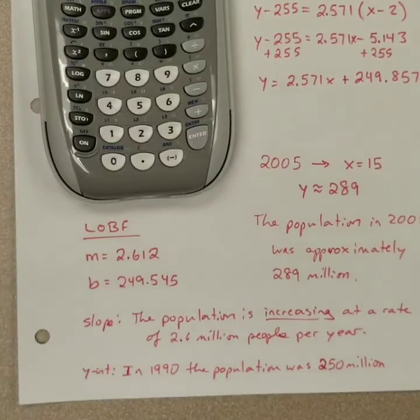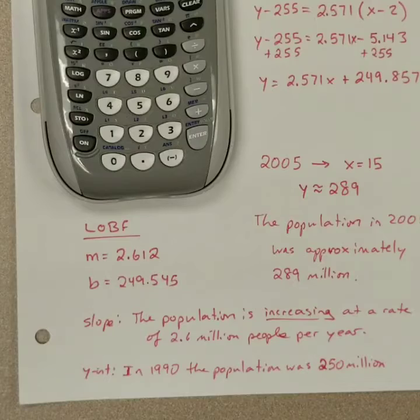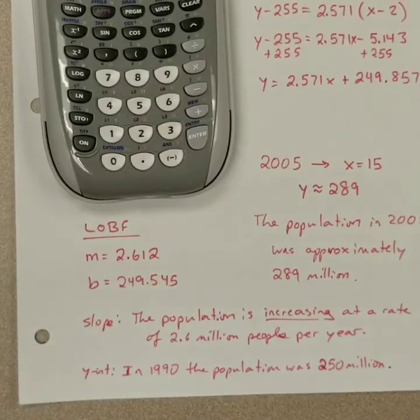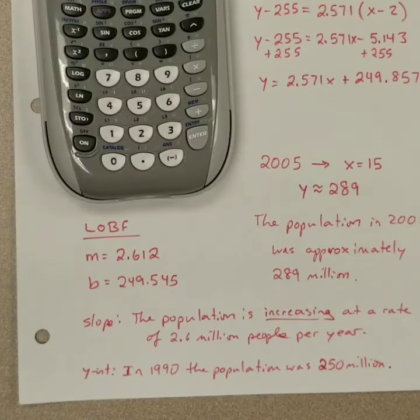Which is off a little bit from what we had in the data. Data said 249 million but again this is an estimate so we're off just a little bit because the line doesn't quite go through all the data points and really we're only off by half a million and that other value was rounded to the nearest million so we could have been pretty close. It's hard to tell.